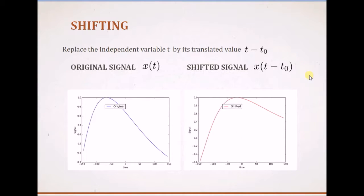Now let us look at the final transformation, that is shifting. For this property, you can obtain the shifted signal by simply replacing the original time t with the value t minus t-naught, where t-naught is the amount of shift. These plots show the original signal, which has a peak very close to minus 50, and the shifted version where the peak has moved to close to 0.